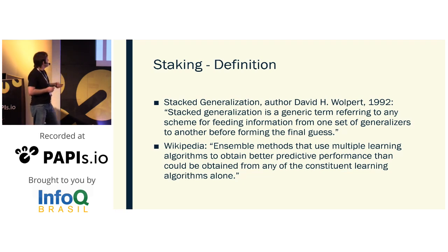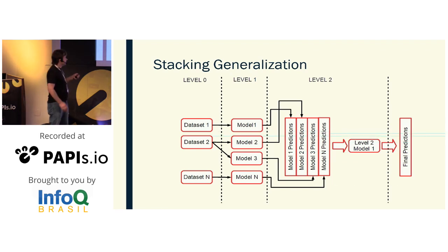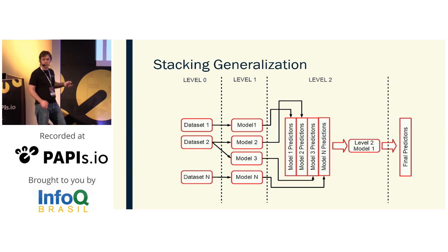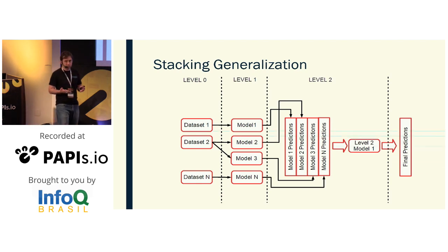From Wikipedia: ensemble methods use multiple learning algorithms to obtain better predictive performance than could be obtained from any of the constituent learning algorithms alone. It's a combination of algorithms or predictions. The basic idea is very simple — sometimes it looks complex, but the idea is: given some dataset, we can have many versions. I train many level-one models, which can be any kind of model, then stack the predictions side by side and train a second-level model using those predictions to get the final prediction. Simple stacking architectures can perform very, very well.